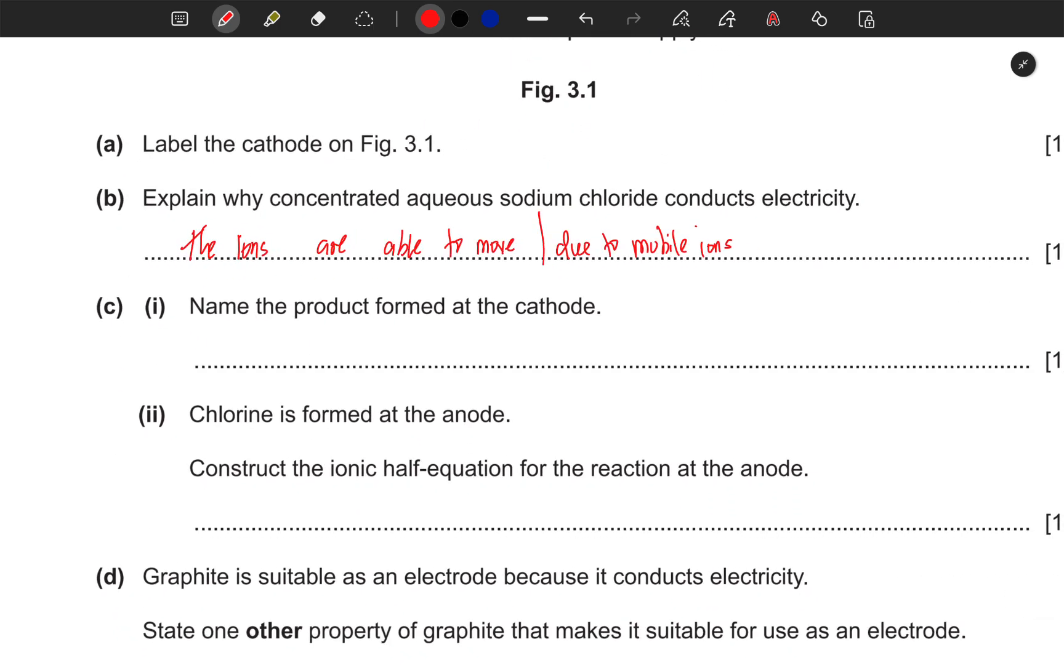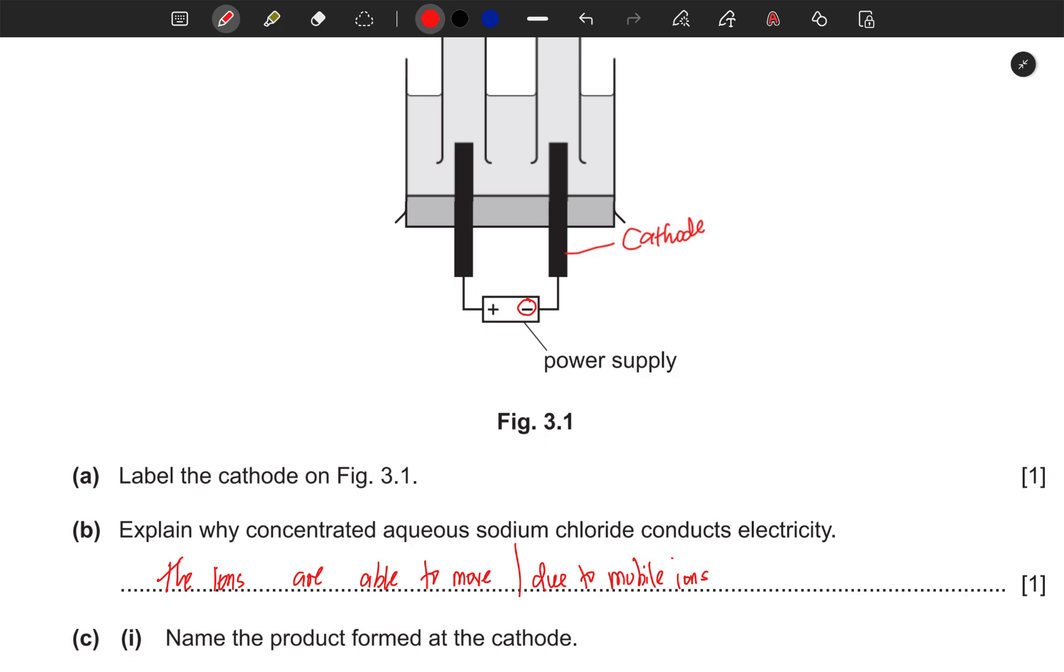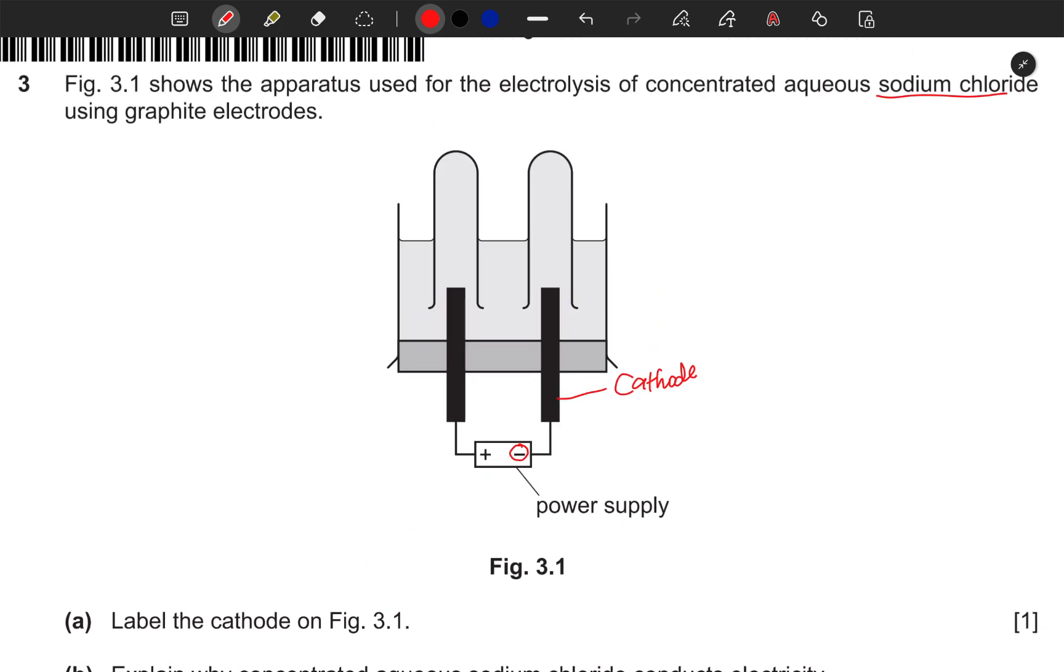Name the product formed at the cathode. So we have sodium chloride. It's aqueous, that means there is H2O there. We know that sodium is positive, chlorine is negative. The hydrogen here is positive, and the oxygen there is negative.